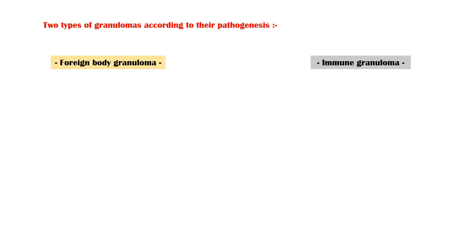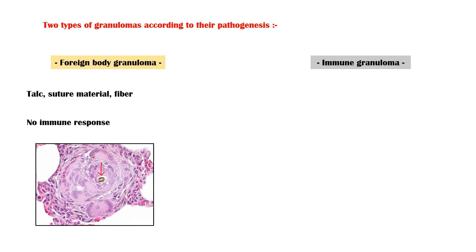Foreign body granuloma occurs when the offending agent cannot be phagocytosed by a single macrophage. It usually occurs against materials such as talc, suture material, and other types of fiber. There is no immune response in foreign body granuloma. The foreign agent can be identified at the center of the granuloma, as indicated by the red arrow in this image.